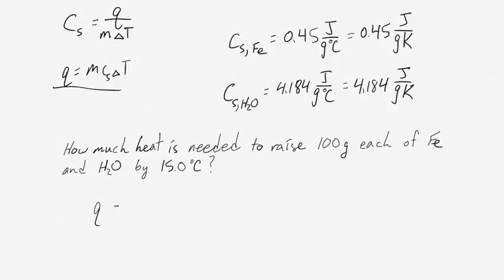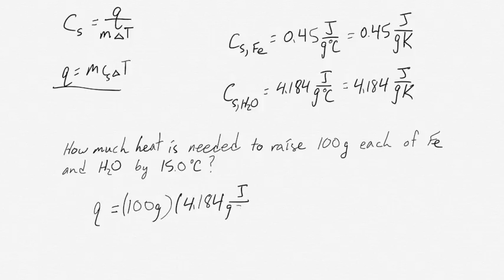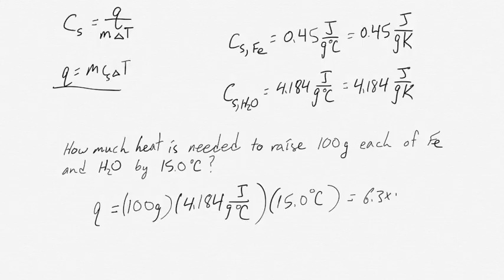The amount of heat needed to raise water by 15 degrees Celsius is calculated exactly the same way. Q equals the mass times the specific heat — 4.184 joules per gram degree Celsius — times a delta T of 15 degrees Celsius. That calculation gives us 6.3 times 10 to the 3 joules, or 6.3 kilojoules.